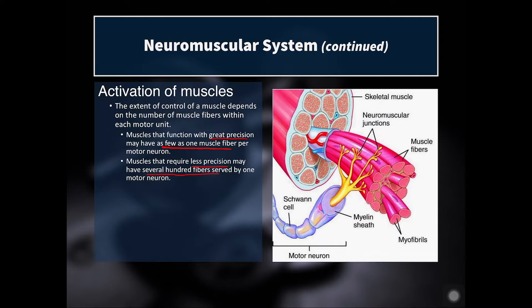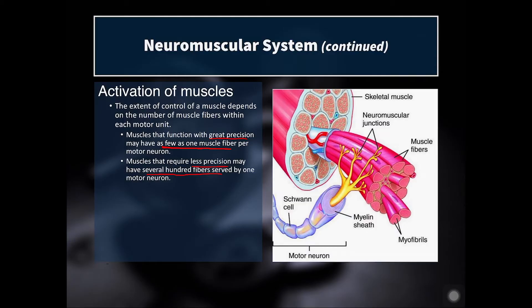Muscles in your eyes or fingers have very fine movement control and have very small motor units, whereas your quadriceps, glutes, or hamstrings have large motor units. Those larger muscles that require less precision tend to be stronger and can develop more force, because as one alpha motor neuron fires, it can create tension and force in hundreds of muscle fibers. Here in this diagram we can see the motor neuron, myelinated with Schwann cells, and all of the neuromuscular junctions where it is innervating individual muscle fibers.